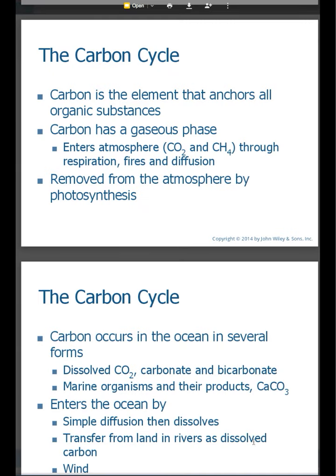Let's move on to a cycle that you're probably pretty familiar with — the carbon cycle. Carbon is the element for us. It is an important element that anchors all organic substances or all living substances. Carbon actually has a gaseous phase. It enters the atmosphere through carbon dioxide and methane, and this occurs through respiration, fires, and diffusion. Anytime we talk about diffusion, we're talking about an area of greater concentration of carbon to less concentration of carbon. The actual carbon is removed from the atmosphere by photosynthesis — plants uptake CO2 and water to make carbohydrates and free oxygen, so that is a sink.